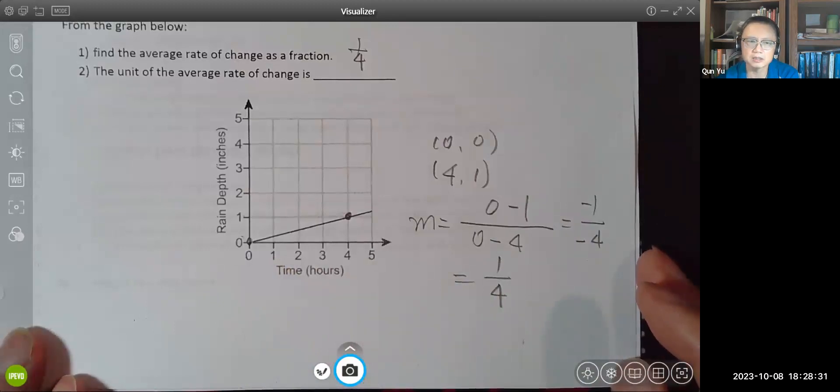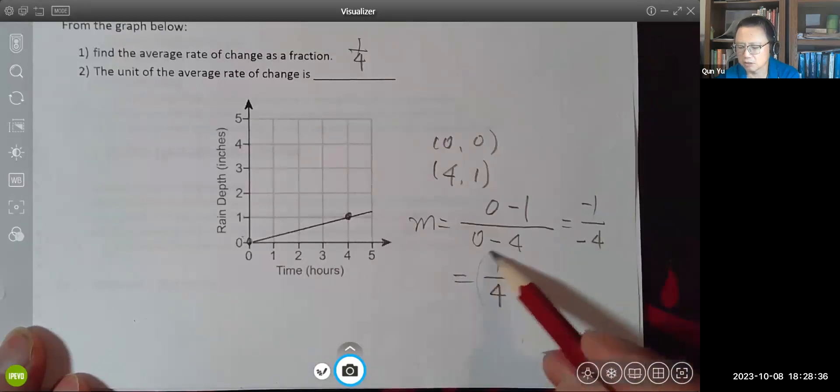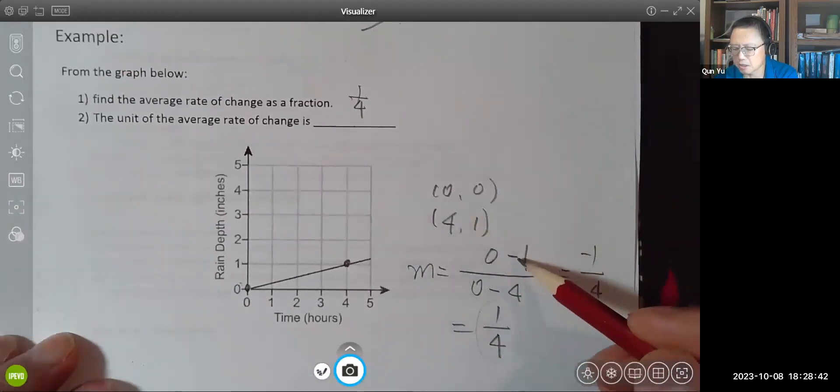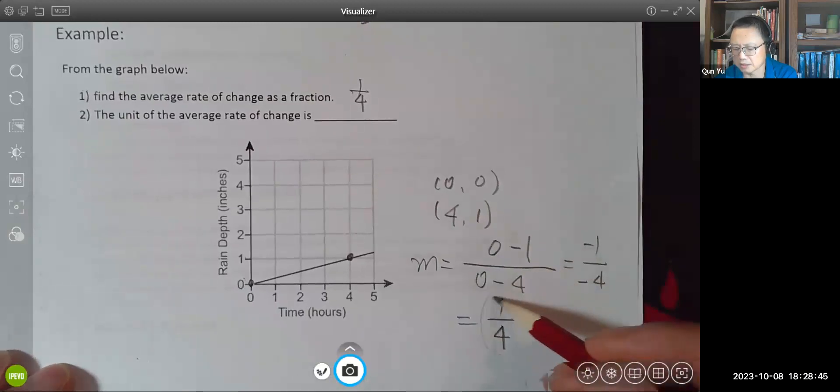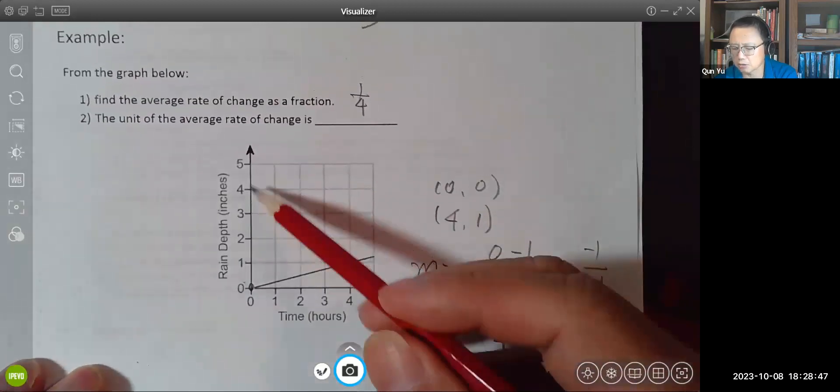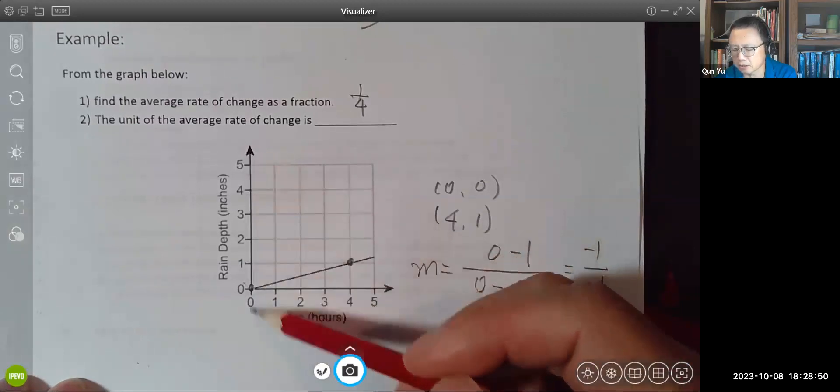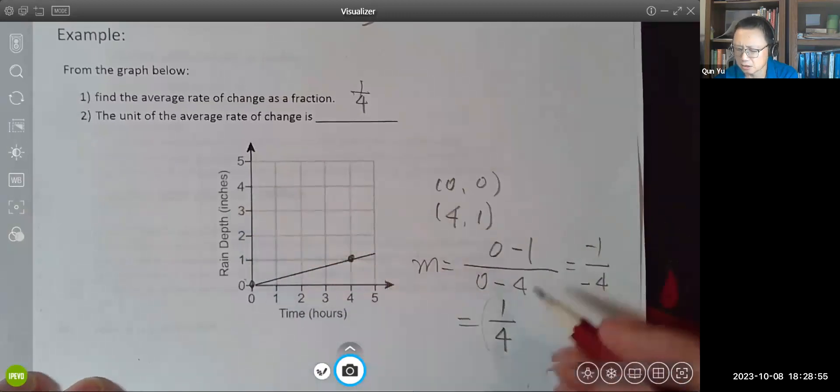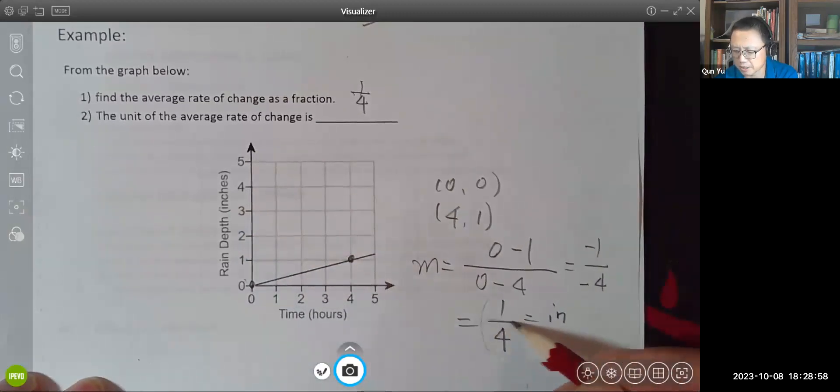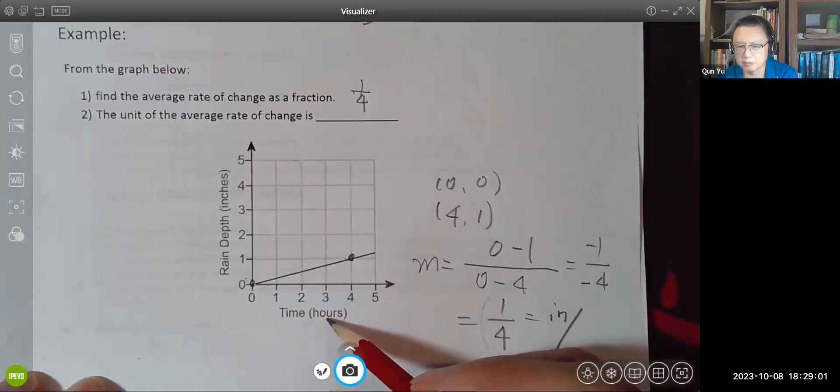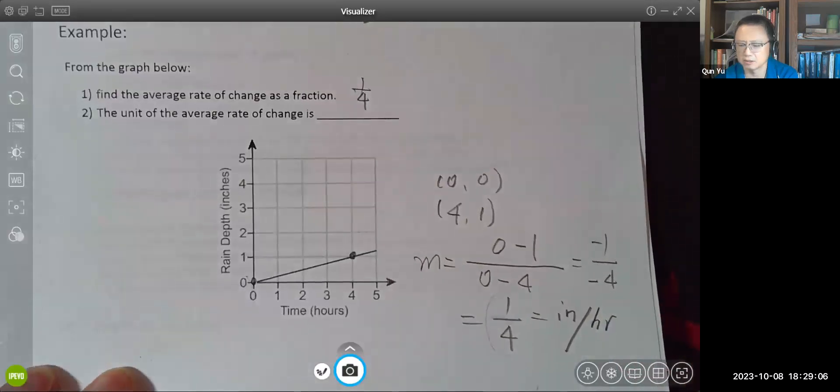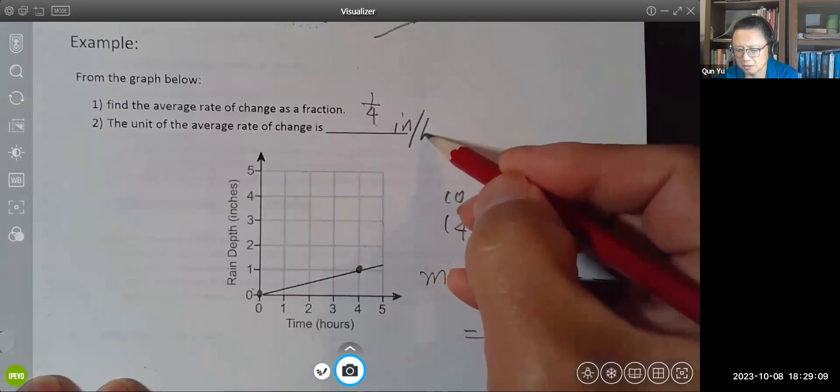Now second question is what is the unit of the average rate of change. So what is the unit of this number? That's why we emphasize the numbers on the top in this formula are the outputs. The numbers on the bottom are the inputs. So what is the outputs? Output is always the vertical axis or y-axis. For us, for this particular example, that is inch. So we're going to have inch on the top, then slash. And what is on the bottom in terms of unit? Hours. So the unit is inch per hour.